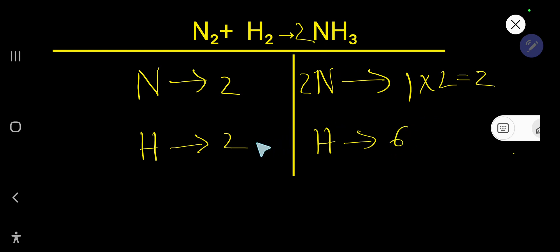So let me change. Now you need to balance hydrogen. Here 2, here 6. So to make it 6 you need to multiply by 3. That gives you 6.